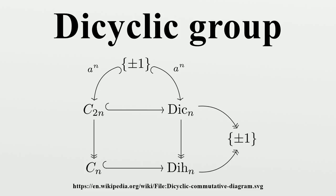For each integer n greater than 1, the dicyclic group DICₙ can be defined as the subgroup of the unit quaternions generated by. More abstractly, one can define the dicyclic group DICₙ as any group having the following presentation. Some things to note which follow from this definition: